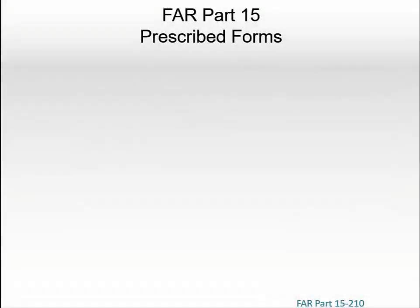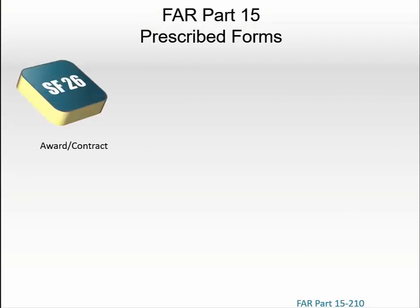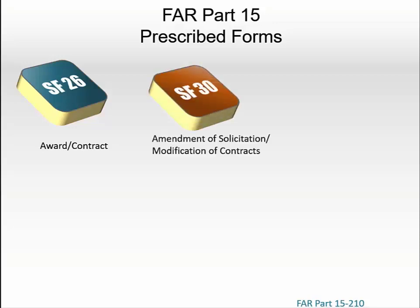There are six forms prescribed for use in contracting by negotiation. Standard Form 26 can be used in entering into negotiated contracts in which the signature of both parties on a single document is appropriate.